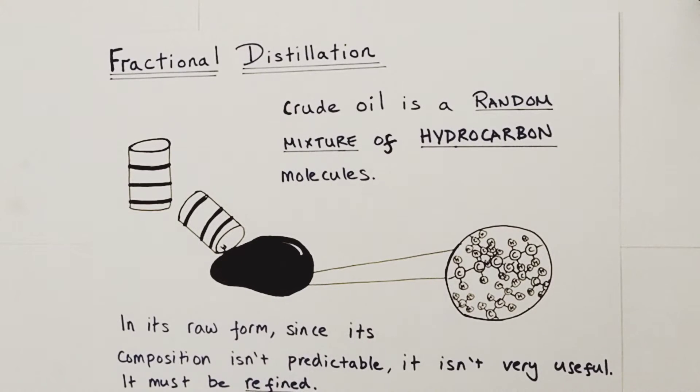Crude oil is a massively important natural resource and many countries' economies are heavily reliant upon it. The strange thing is, in its raw form, since its composition isn't particularly predictable, it's not very useful. It doesn't burn well and can't be used as fuel. It must be refined, and that refining process is fractional distillation.